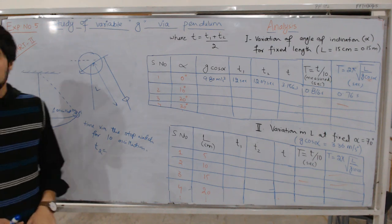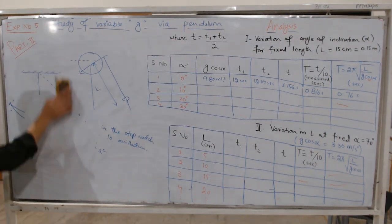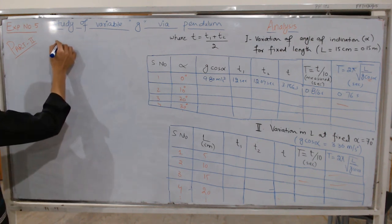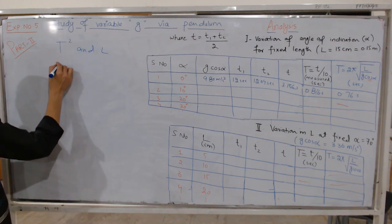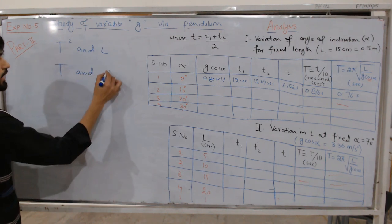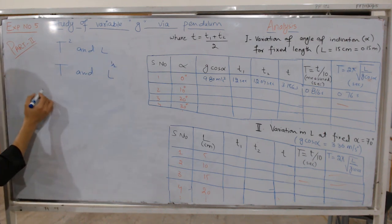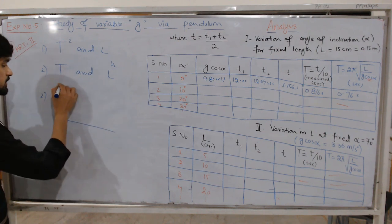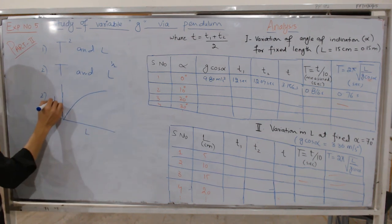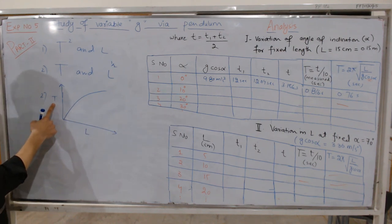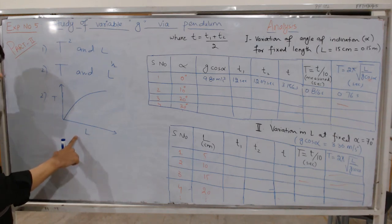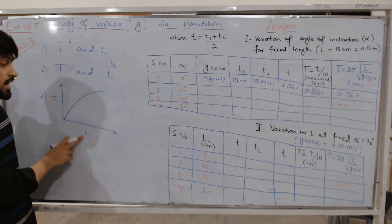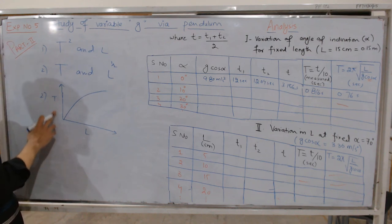At the end, you will have to plot a graph. You can also insert an extra column for T². We discussed plotting a graph between T² and L, or alternatively between T and L^(1/2). For the T vs L case, the relationship is non-linear, so you would get a non-linear curve — L on the x-axis (independent variable) and time period on the y-axis (dependent variable).